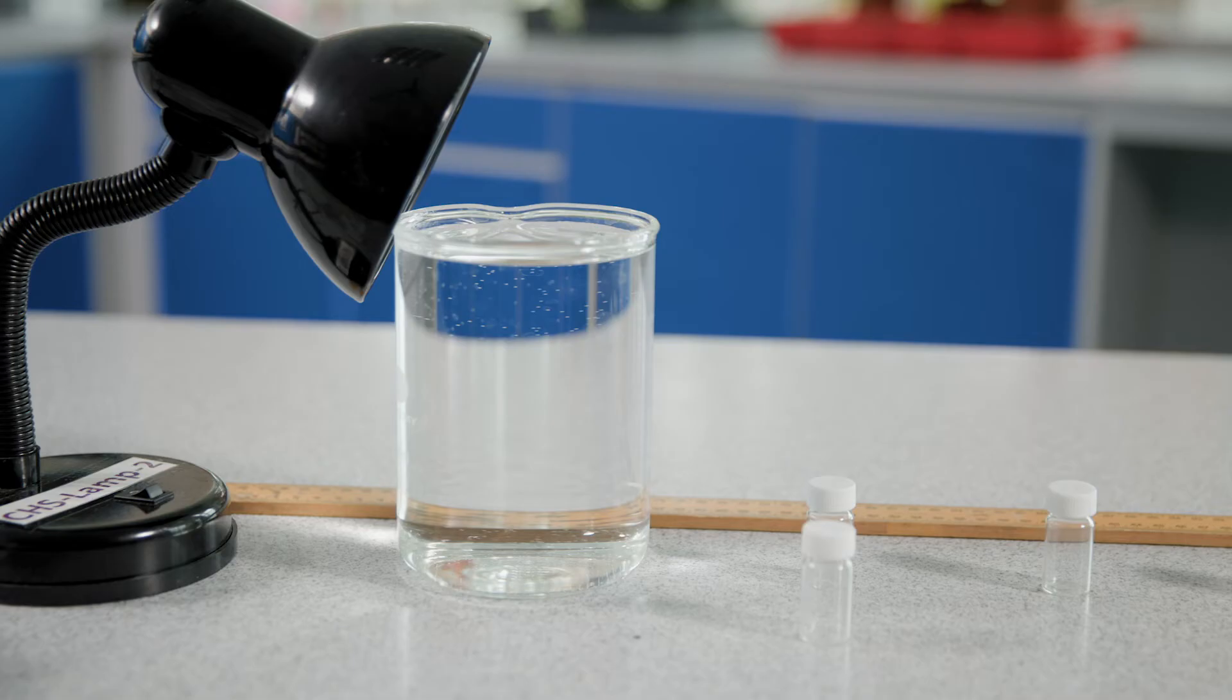Make sure you also set up a control variable. To do this, set up a heat filter between the lamp and where you will place your tubes. The heat filter is a water-filled clear container.